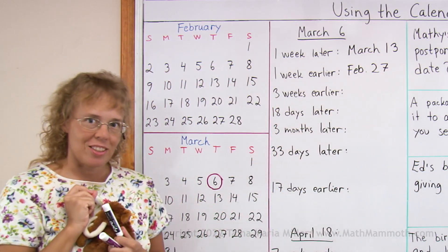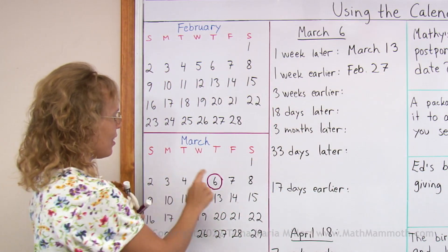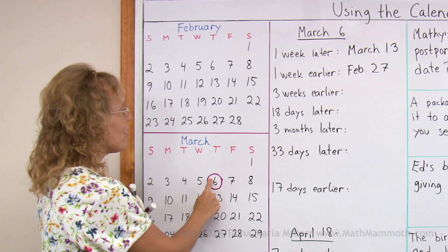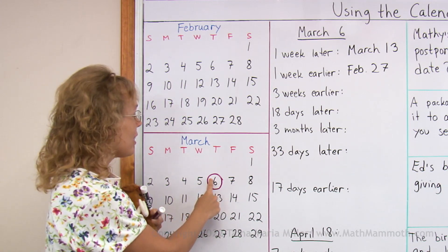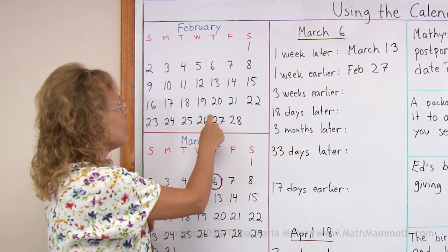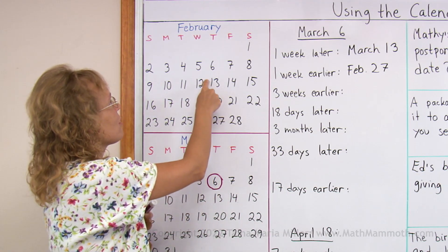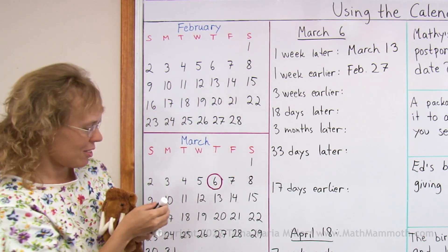Three weeks earlier. We can use the same thing. I'm here and I'm going to go three weeks up — one, two, and three. So February 13.